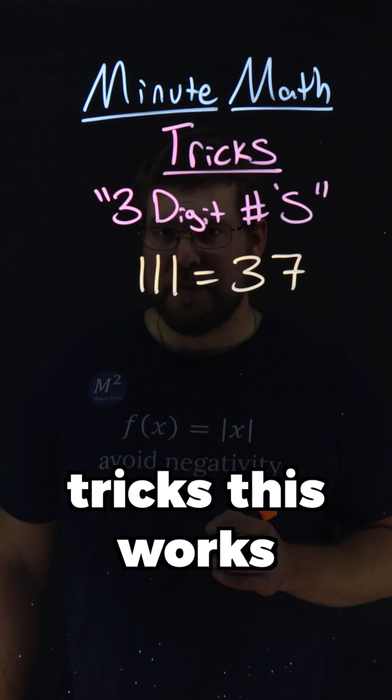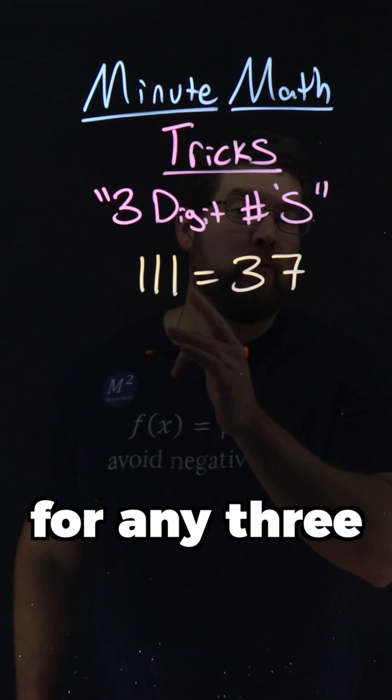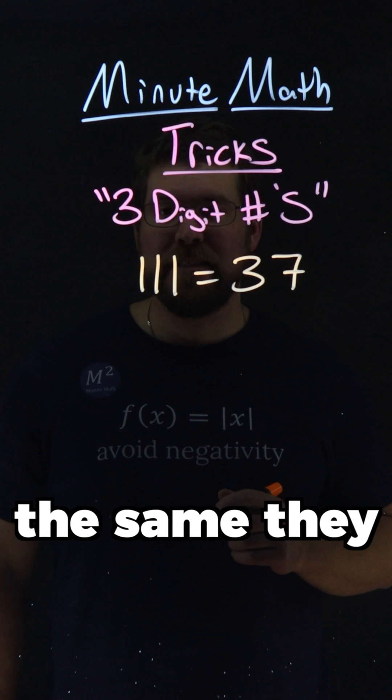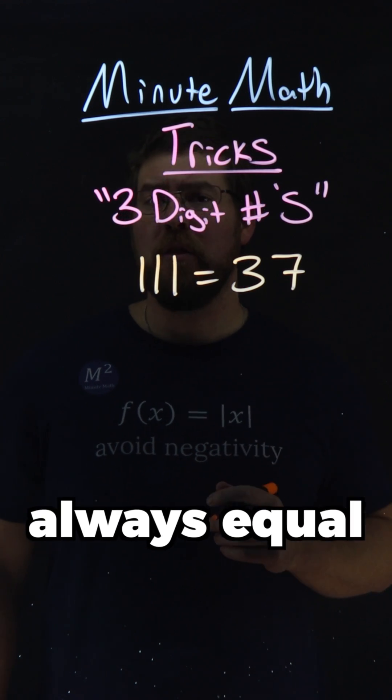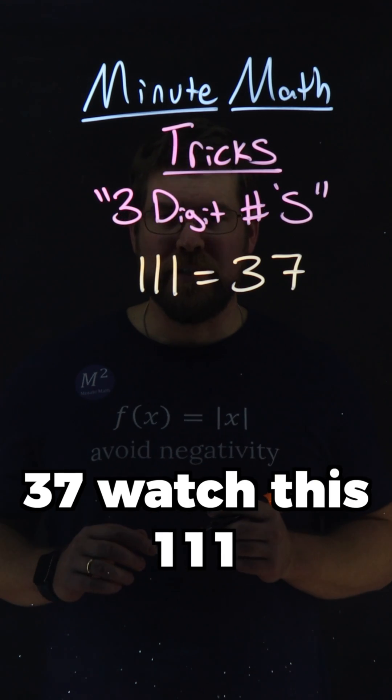Let's learn some MinuteMath tricks. This works for any three-digit number that is all the same. They always equal 37. Watch this.